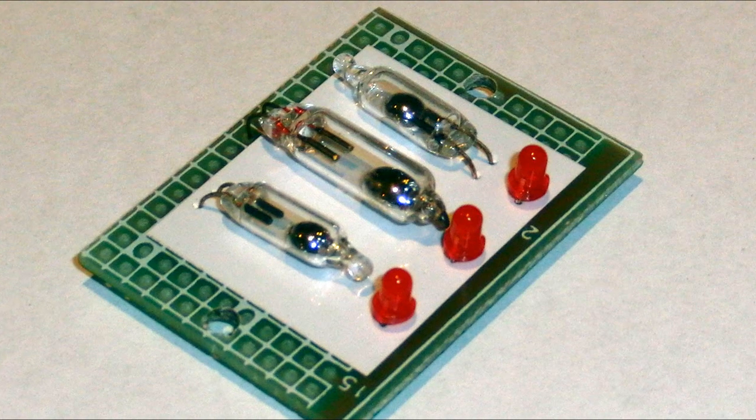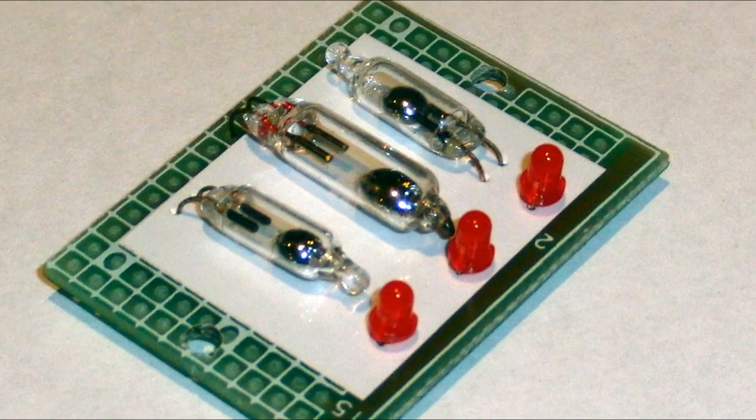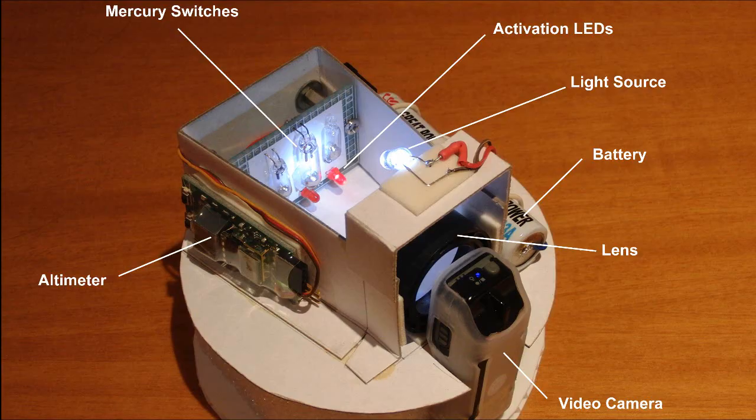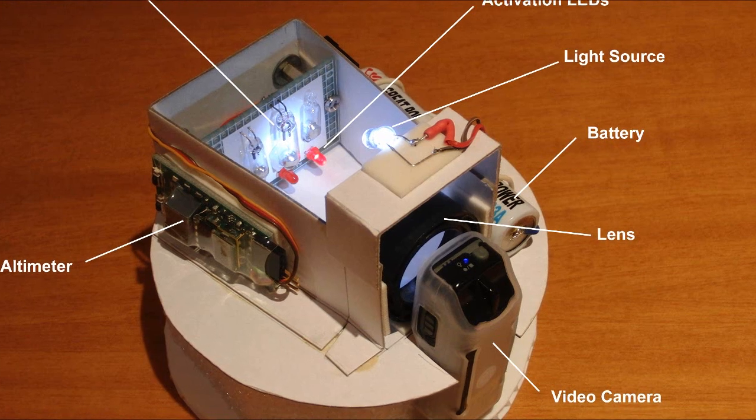What we've done here is set up an experiment. We mounted three mercury switches on a PCB and connected each to an LED so that we can see when they activate. We then place the board in the microlab payload bay.